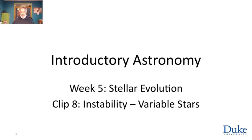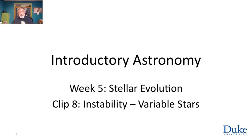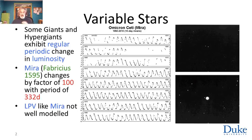Here's another thing that stars do — some stars vary. We talked about eclipsing binaries; that's one way for the brightness of a star to vary periodically, but it turns out that some stars vary intrinsically, and the most famous one by far is Mira.